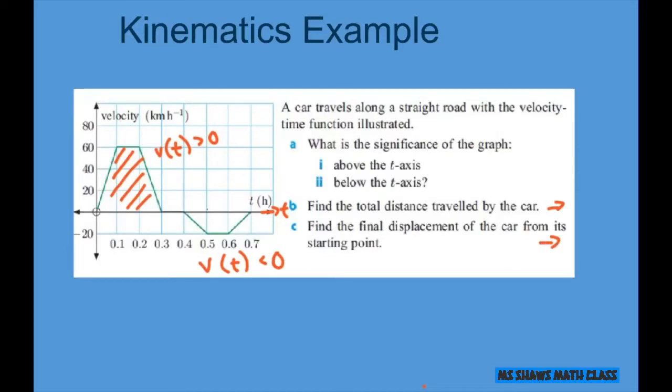So before we begin, we know that our displacement is s(t). And if it's above the graph, it's going to be positive. And if our velocity is positive, that means the car is moving forward, or you could say to the right.